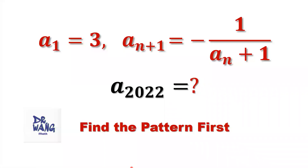Hello everyone, I'm Dr. Wen. Here I ask the question: Let's consider a sequence an, if a1 equals 3, and an+1 equals negative 1 over an plus 1. What is the value of a2022?